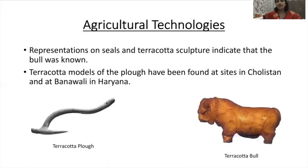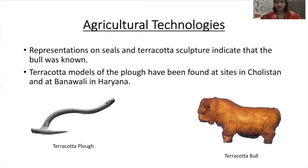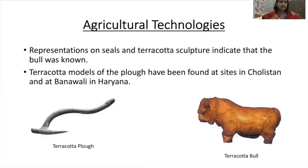Let us see the agricultural technologies. Representations on seals and terracotta sculpture indicate that the bull was known, and a terracotta bull picture has been provided. Terracotta models of the plow have been found at sites in Cholistan and at Banawali in Haryana. If you see the photograph, the terracotta plow is not very different from the ones found in modern days.